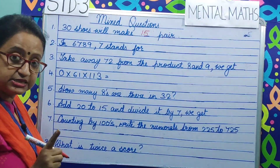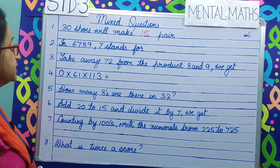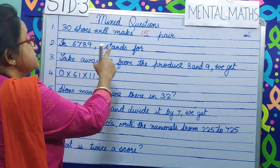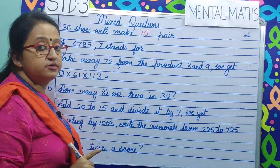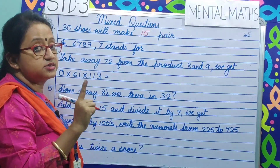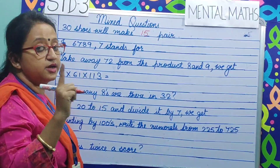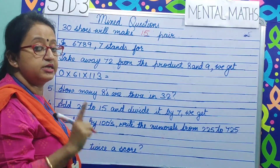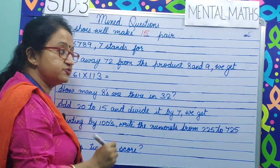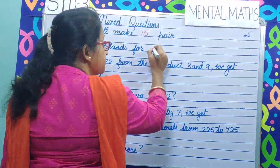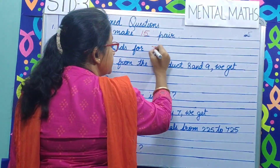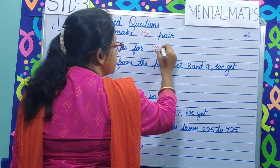Question number 2. In 6789, what does 7 stand for? 7 stands for 700. Very good.